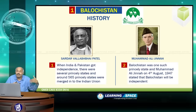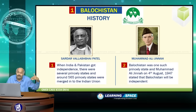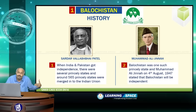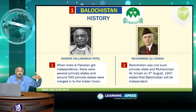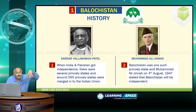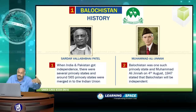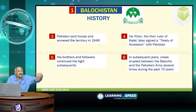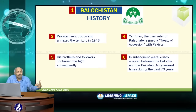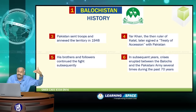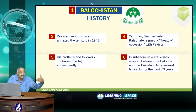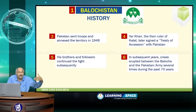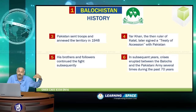Going back to history: during 1947, when India and Pakistan got independence, there were around 565 princely states amalgamated into Indian territory. As per the Instrument of Accession, Jammu and Kashmir was amalgamated into Indian territory. Balochistan was another princely state, and Muhammad Ali Jinnah on 4th August 1947 stated that Balochistan would continue to be independent. But subsequently, Pakistan sent troops in 1948 and annexed the territory. The then ruler of Kalat later signed the treaty of accession with Pakistan, and his brothers and followers continued the fight. Crisis erupted between Balochistan and the Pakistan army several times over the past 70 years.